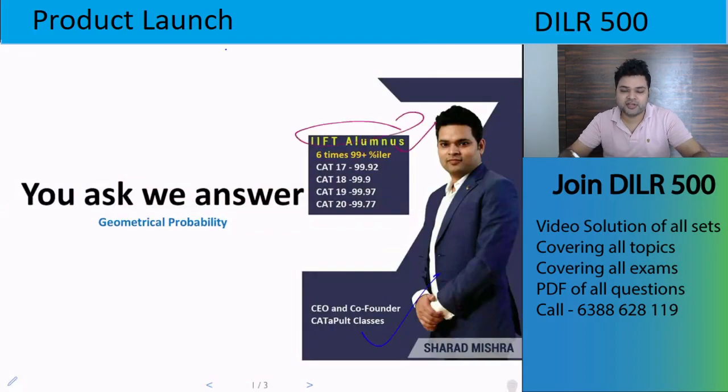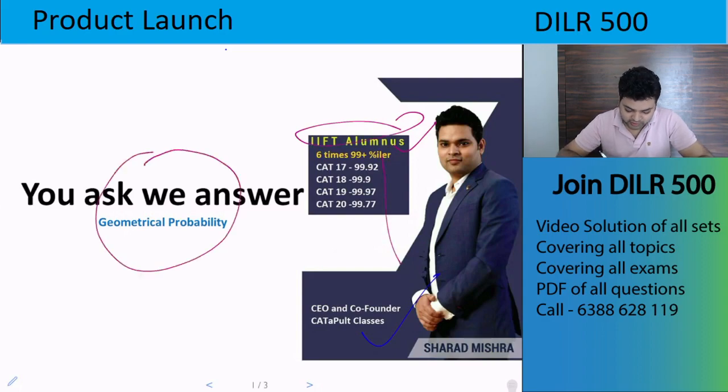Six times 99 plus percentile. I am going to answer a question under the series You Ask, We Answer. This question is of geometrical probability.